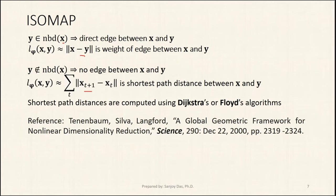Here's a reference: this is the original paper in which Isomap was proposed — Tenenbaum et al., 'A Global Geometric Framework for Non-Linear Dimensionality Reduction,' Science, Volume 290, December 22, 2000.